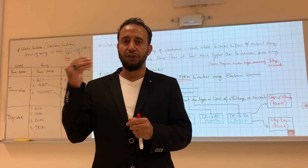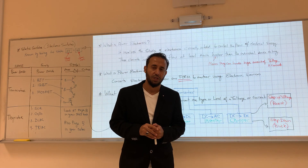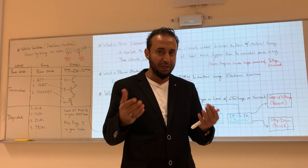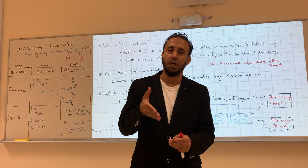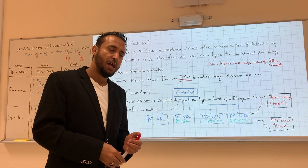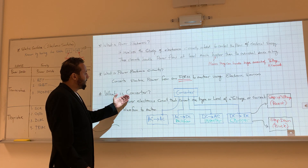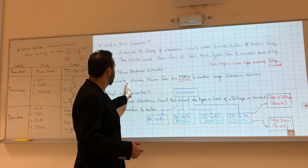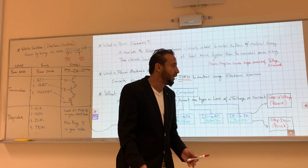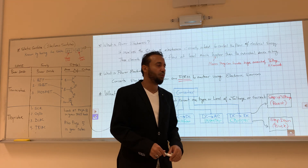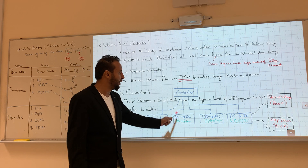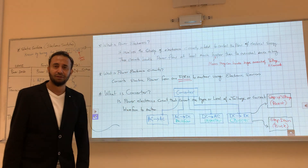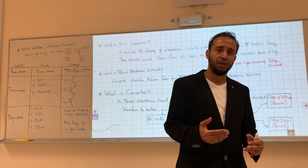We will convert from one form to another. You did this in electronics when you converted AC into DC, which we call rectification, using a diode. We'll repeat the same idea but with more detail and go deeper into three-phase circuits. A converter is a power electronic circuit that converts one type or level of a voltage or current waveform to another.